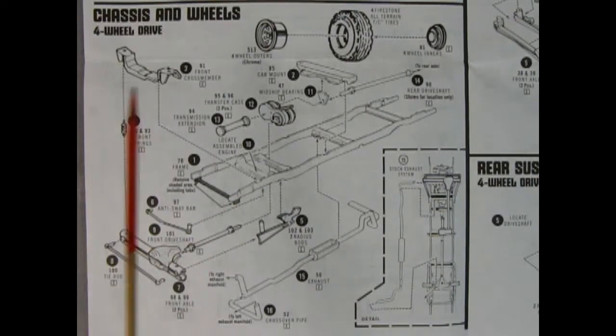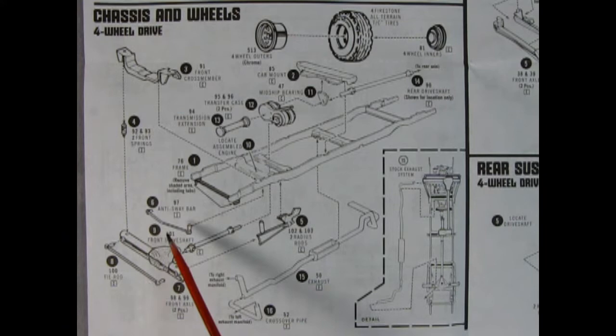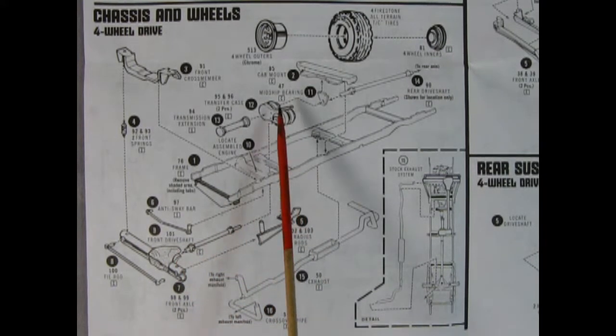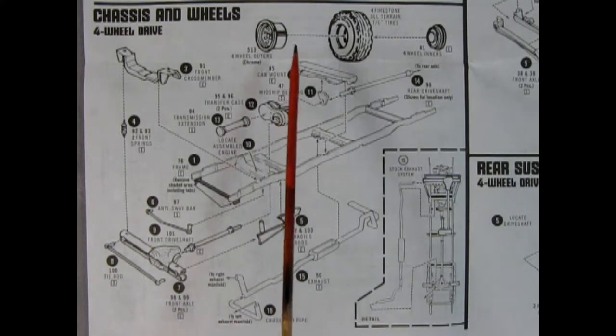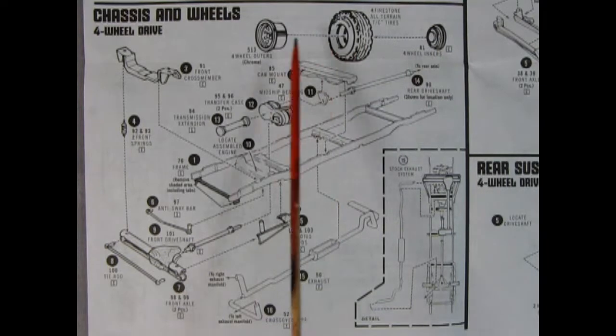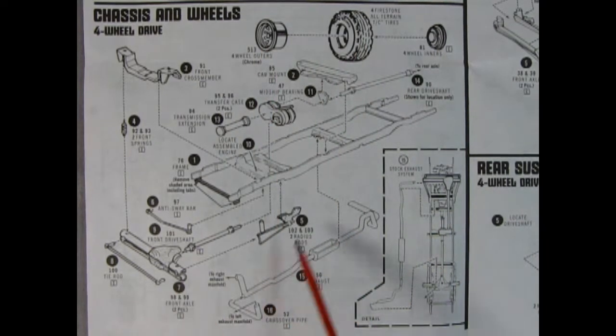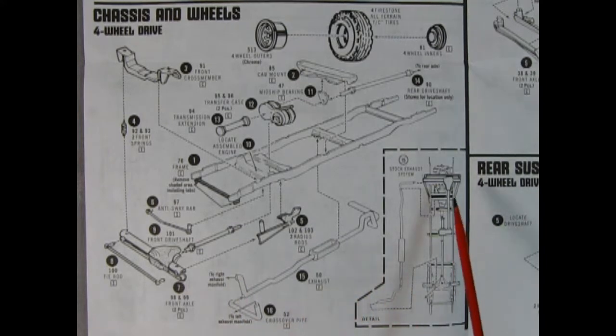For the optional four-wheel drive you get a differential up front with the tie rod and an anti-sway bar as well as our front drive shaft. Here's our transmission four-wheel drive cross member components and then this is how our wheels go together with the backing plate, a tire and a wheel up front. Again you also get the exhaust pipes and the radius rods and here's everything going together in this illustration there.